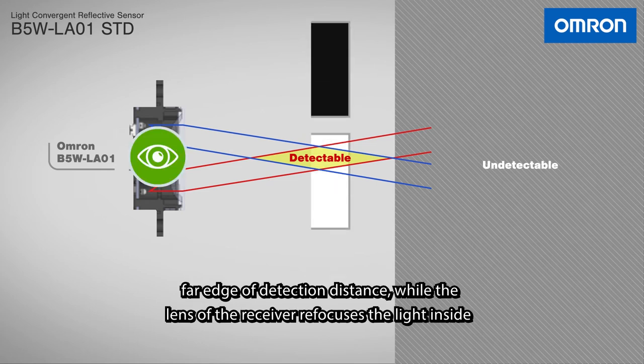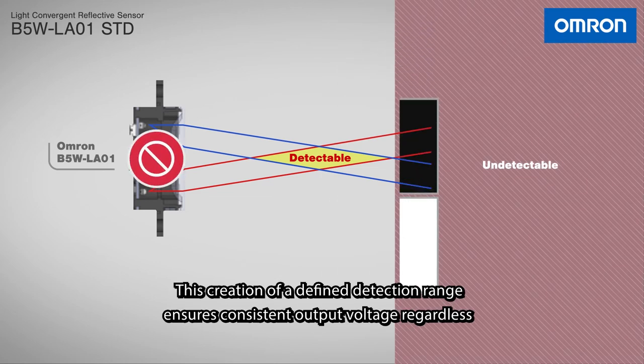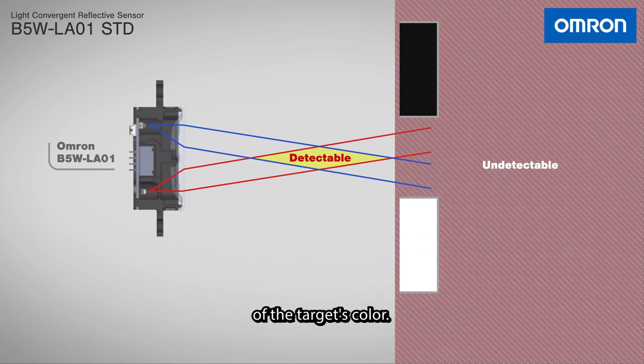The lens of the receiver refocuses the light inside of the convergent zone. This creation of a defined detection range ensures consistent output voltage regardless of the target's color.